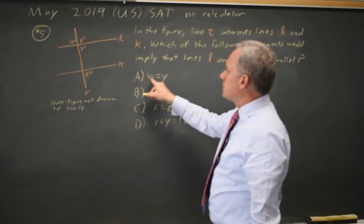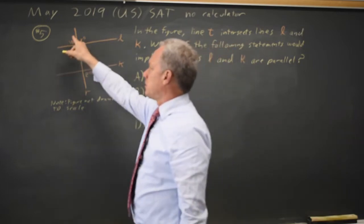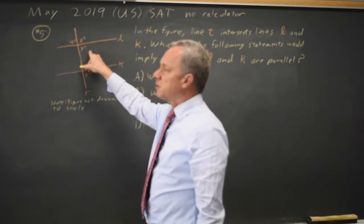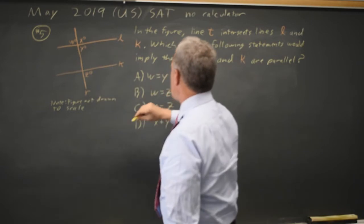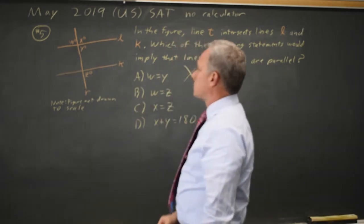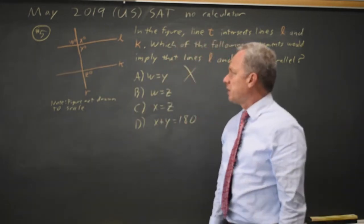Choice A is W equals Y, where angle W is here, angle Y is here. These angles are always equal, so that is not going to prove that L and K are parallel.